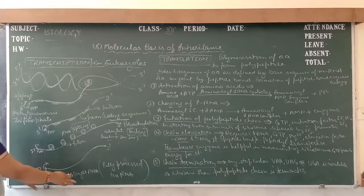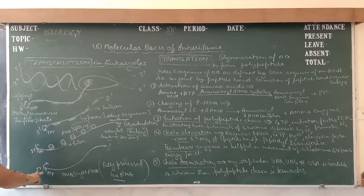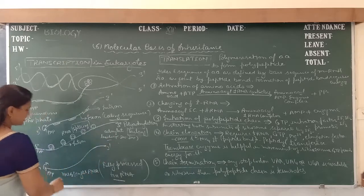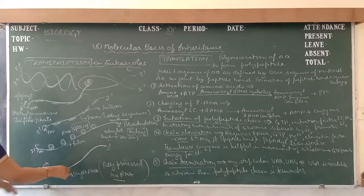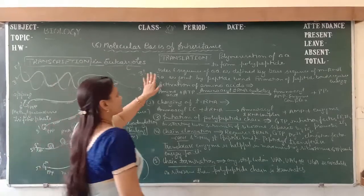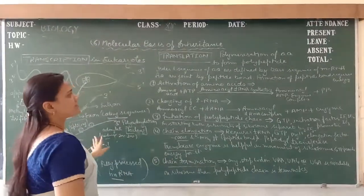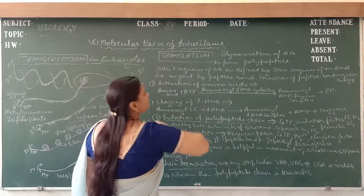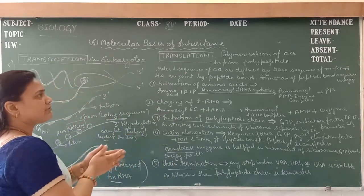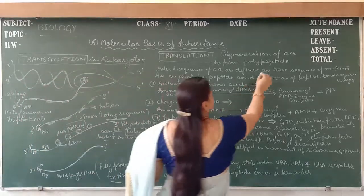The fully processed messenger RNA is known as heterogeneous RNA. At the 5' end, it contains methyl guanosine triphosphate, and at the 3' end, adenine residues are present. Only exons are connected with each other. The next process is translation. The first step of translation is the formation of messenger RNA. After the formation of messenger RNA, protein synthesis occurs. Translation is protein synthesis — the polymerization of amino acids to form a polypeptide.